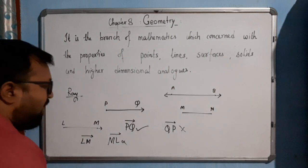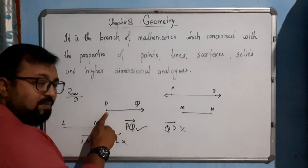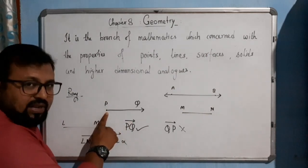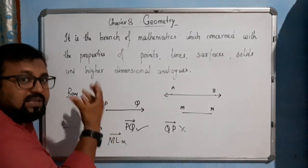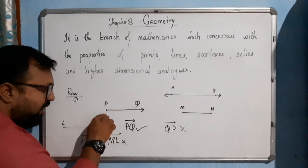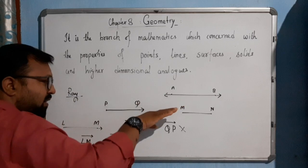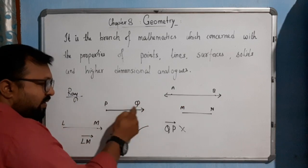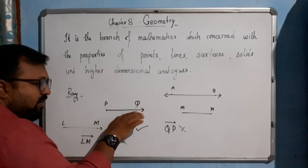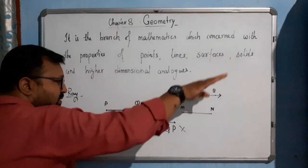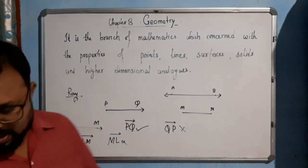So a ray has one starting point, or origin, from where it originates, and it moves endlessly in one direction. For example, here Q is the point through which it moves endlessly. This is known as a ray.